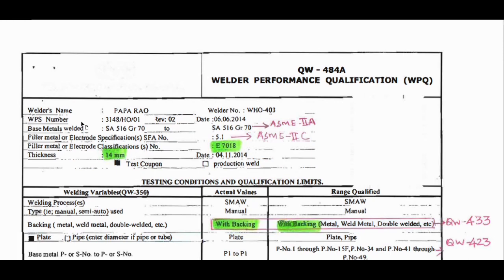The WPS number is the Welding Procedure Specification number the welder followed during qualification. Here the base material is SA516 Grade 70, which is a plate material and a carbon steel material, described in ASME Section 2A — it's a ferrous material. The electrode specification SFA number is 5.1, and the electrode classification is E7018, which is a low hydrogen electrode, given in ASME Section 2C.